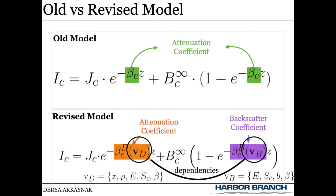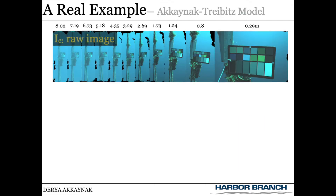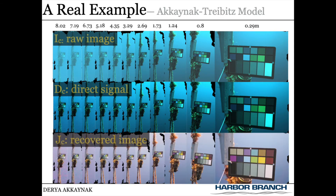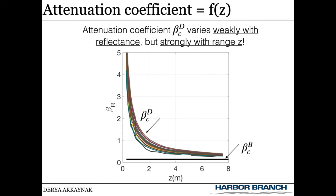Let's look at a calibrated experiment where we have ground truth. Here's a color chart imaged from 8 meters to 30 centimeters. Using the gray patches, we calculate and subtract backscatter — notice how the layer of fog is now gone. Using the color patches, we calculate attenuation; now the light in all the images is standardized. These are the attenuation coefficients and the backscatter coefficient from this calibrated example. There's one attenuation coefficient for each color, and they all vary with range. The backscatter coefficient is constant for the scene — it's the black line on the bottom and does not vary strongly with range.